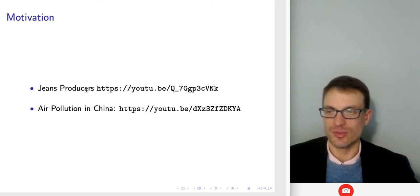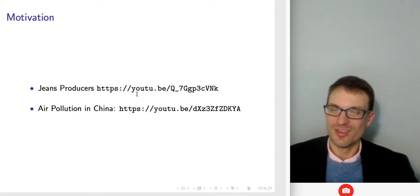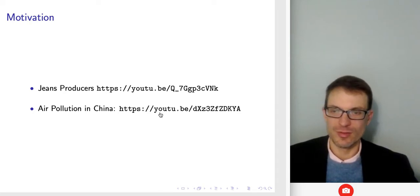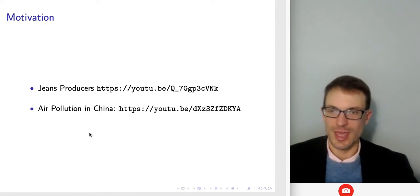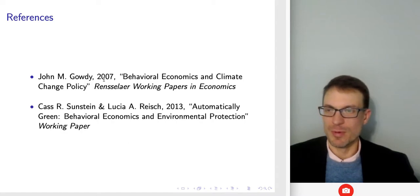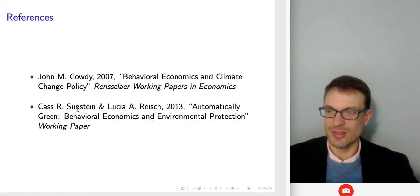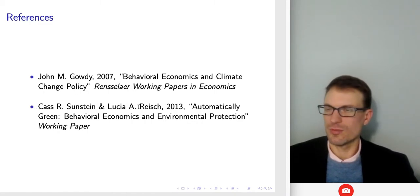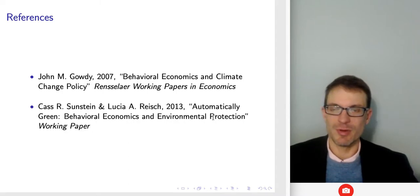There are a couple of videos here you can click through — one about producing blue jeans, where a river turned blue because of the dyes, and a link to see air pollution in China, which is really foggy and hazy but it's air pollution. The two papers I'm going to be thinking about are one on behavioral econ and climate change policy, and second, Sunstein and Reich on 'Automatically Green: Behavioral Economics and Environmental Protection.'